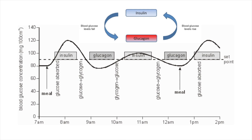Blood sugar levels do not remain constant throughout the day. The dotted line on the graph represents the set point — the ideal blood sugar level. But it fluctuates. For example, when you wake up at seven in the morning, your blood sugar levels will be lower than the set point because you haven't eaten all night. They won't be too low because over the night your body has regulated somewhat, converting some fats into sugars or converting glycogen into sugars, but it will still be below that set point.